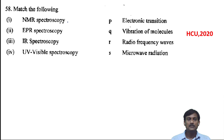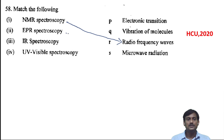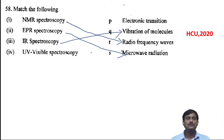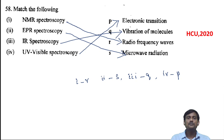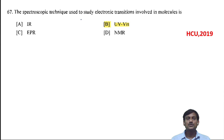NMR spectroscopy uses radiofrequency. EPR spectroscopy uses microwave radiofrequency. IR spectroscopy involves vibration of molecules — it is vibrational spectroscopy. UV-visible spectroscopy involves transition between electron levels — it is electronic transition. The correct matching: NMR matched with R, EPR matched with S, IR matched with Q, UV-vis matched with P.